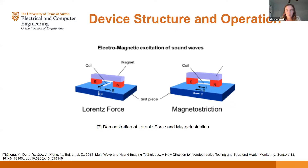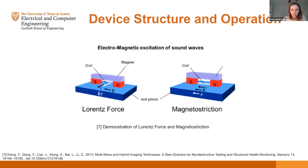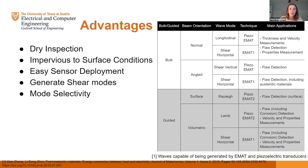Another feature of EMATs is that with ferromagnetic conductors, you get an effect called magnetostriction — the property of ferromagnets to expand or contract in response to a magnetic field. This produces additional stresses that enhance the signal to much higher levels than could be obtained by the Lorentz force alone. The catch is that you have to be working on something ferromagnetic for this effect to aid the EMAT.